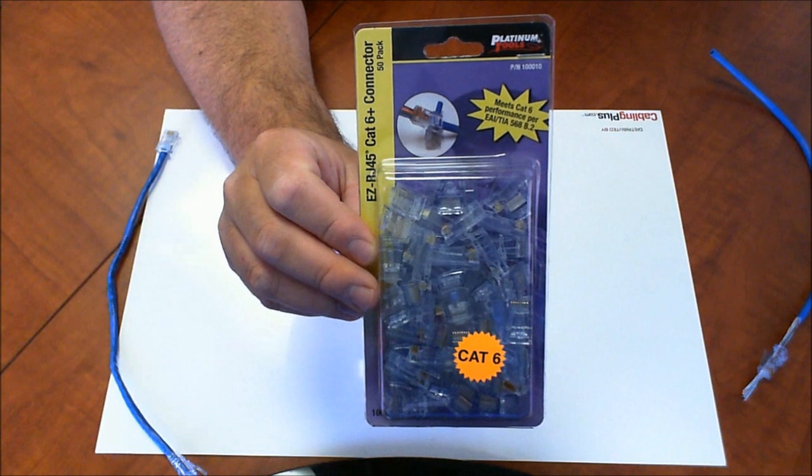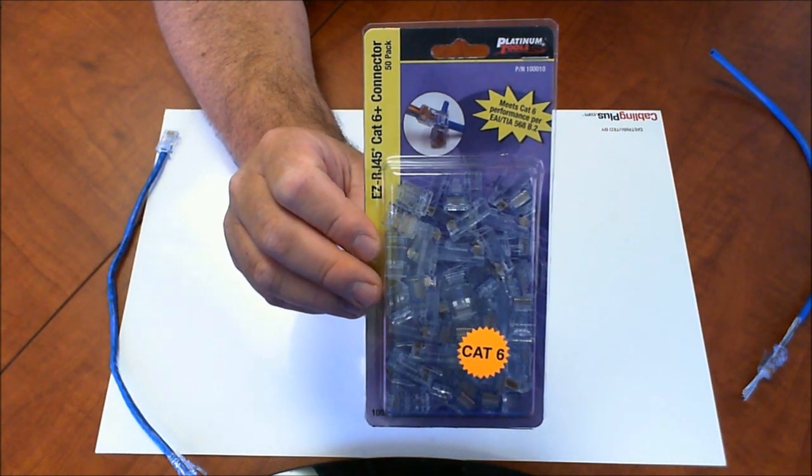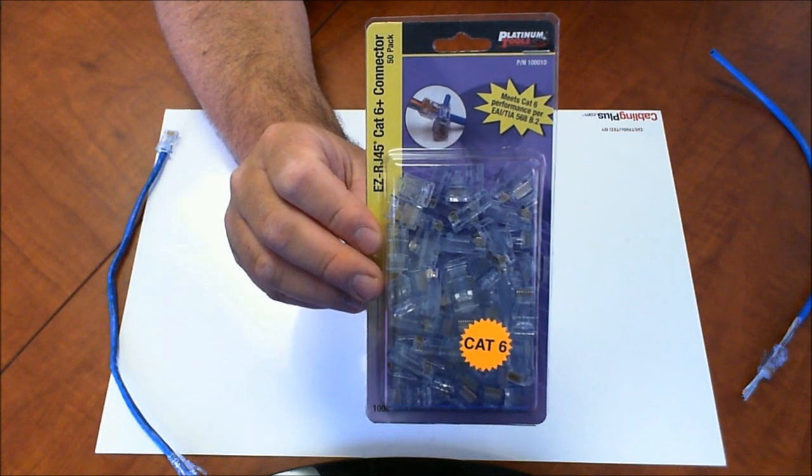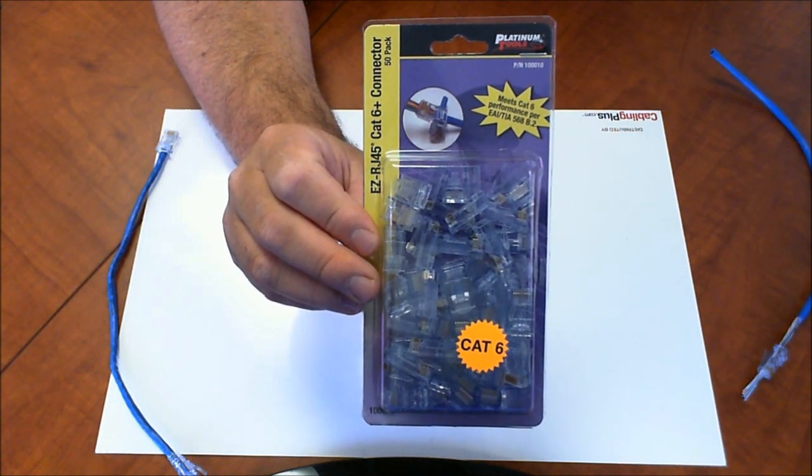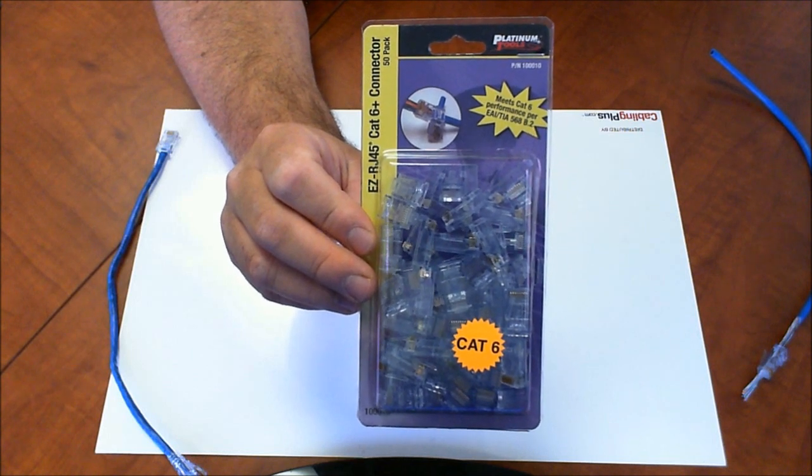Hello, this is Eric from cablingplus.com. Right now I have the Platinum Tools EZ-RJ45 Cat 6 connectors. They're modular connectors, the easy type, and their part number is 100010.